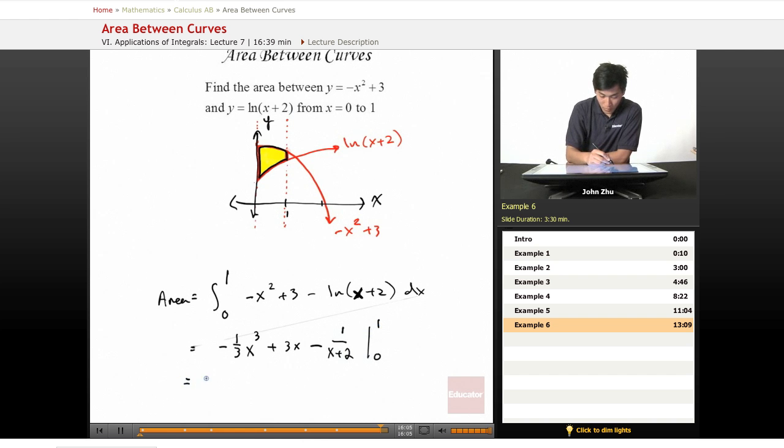So plugging everything in, we get negative one third plus three minus one third minus zero zero plus zero minus a half, which equals approximately 2.83.